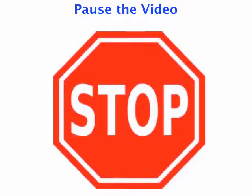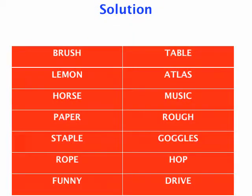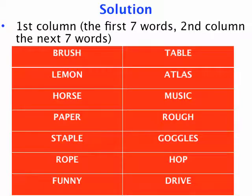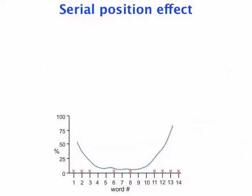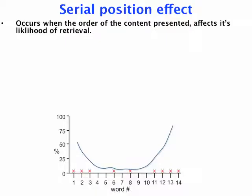So let's start writing those words down. Here are the solutions. On the left column we've got the first seven words, and on the right column we've got the next seven words. If you have a class doing this, you might want to plot your results on a graph and see what type of shape you get. You'll probably get something that looks like a U-shaped graph, where we've got both the primacy and the recency effect, with low recall of the middle items.